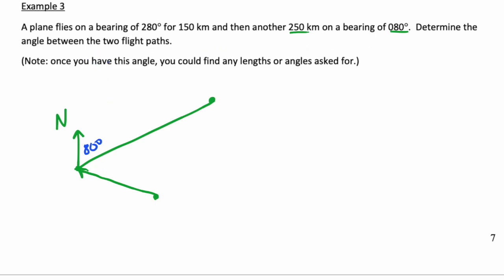The question is asking you for determining the angle between the two flight paths - that's this angle right here. Over here we have - this is 280. This diagram is getting a bit busy. Let's draw this a bit bigger. That's 280. That means this angle right here is 360 minus 280. This angle here has to be 80.